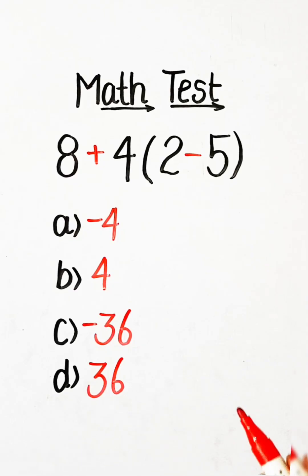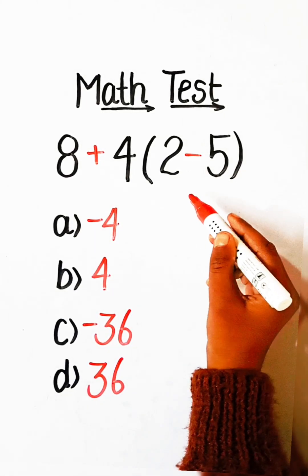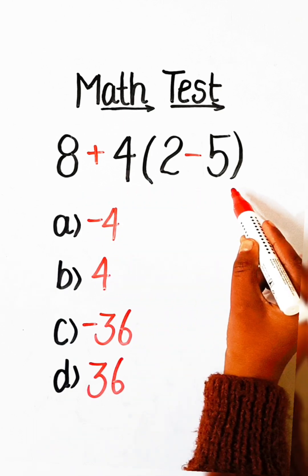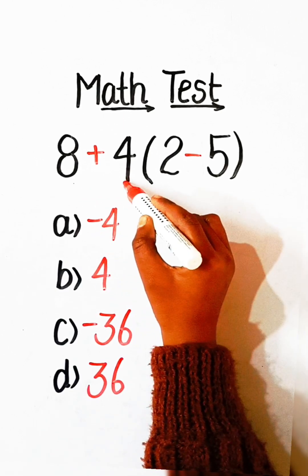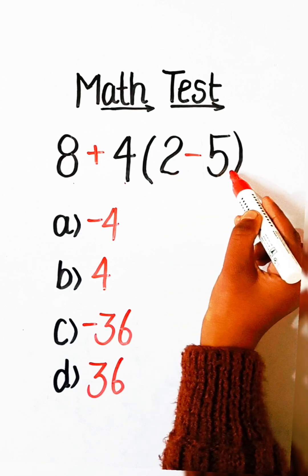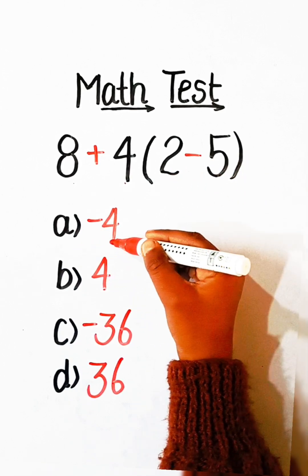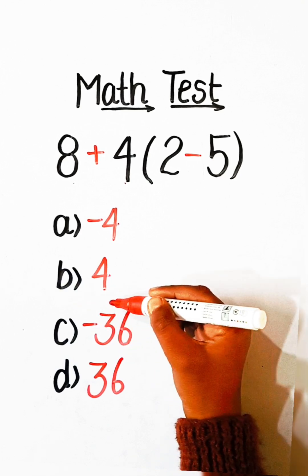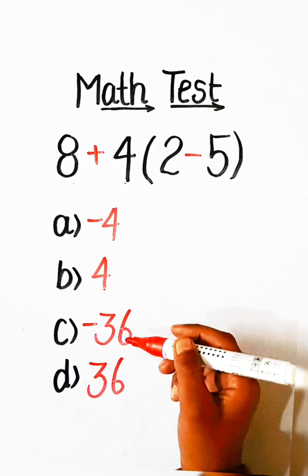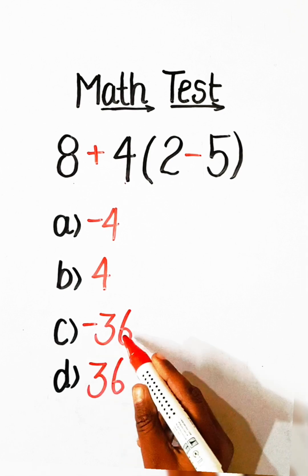Hello everyone, welcome back to my YouTube channel. In this video we will solve this math equation: 8 plus 4 under bracket 2 minus 5 equals to what? Option A: minus 4, Option B: 4, Option C: 36, Option D: minus 36.